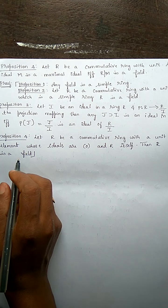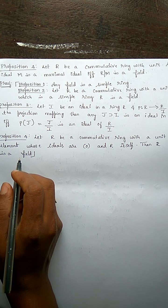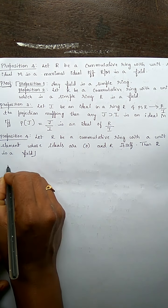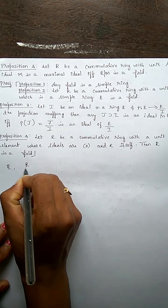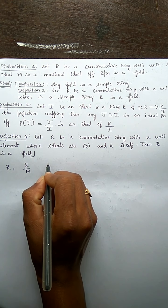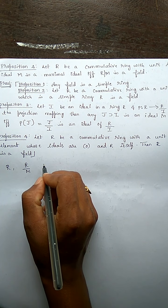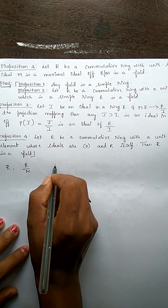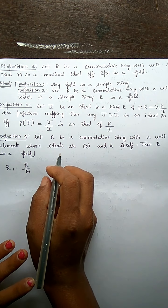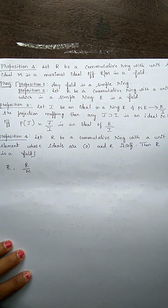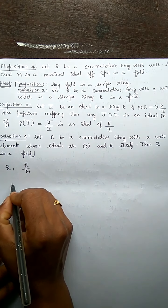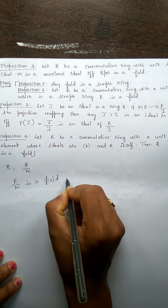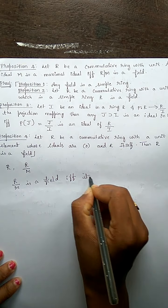Now let R be a commutative ring with unit. Since R is commutative, R by M is also a commutative ring with unit element 1. We have to prove R by M is a field. By using propositions 1 and 2, R by M is a field if and only if it has no proper ideal.